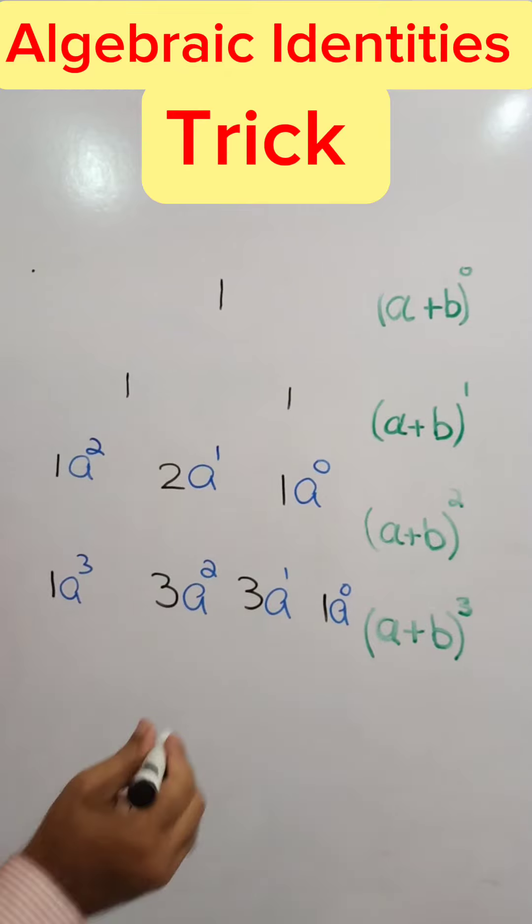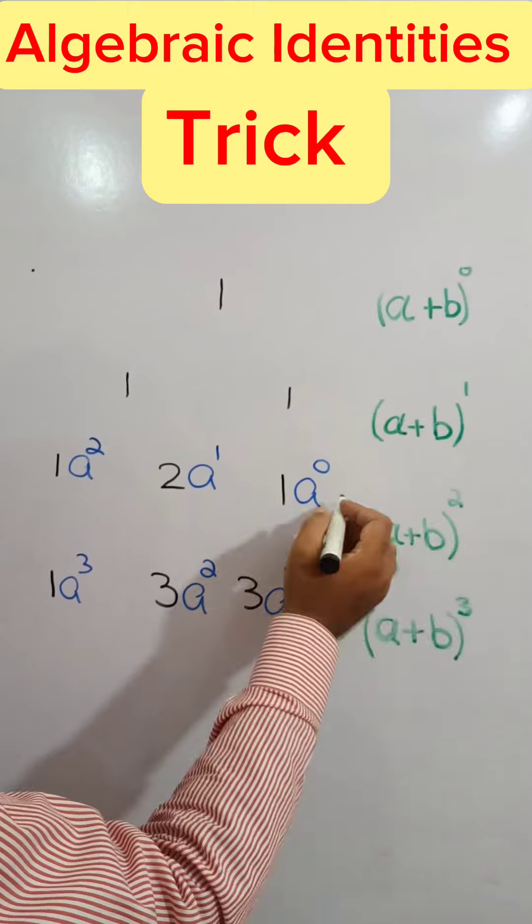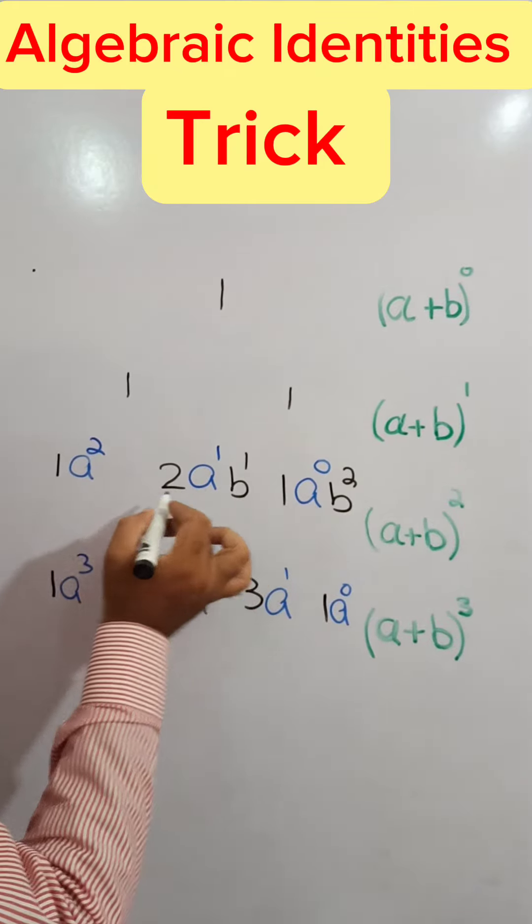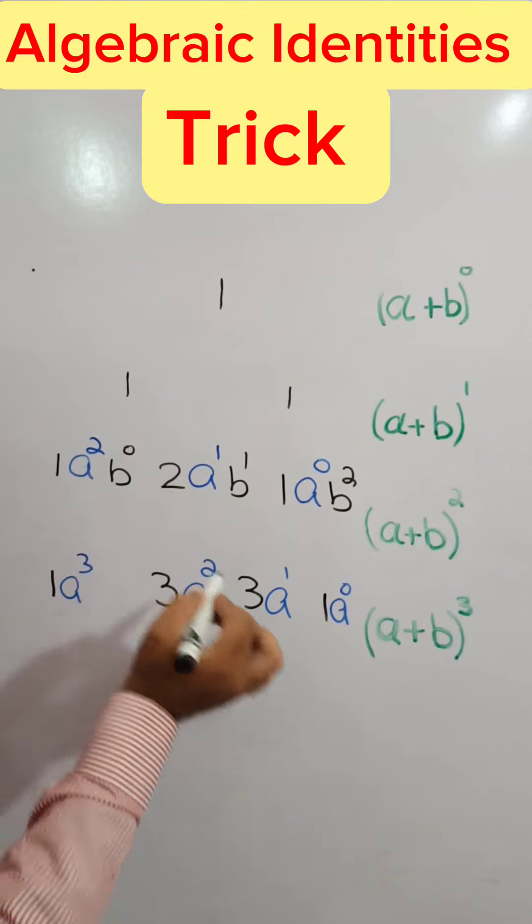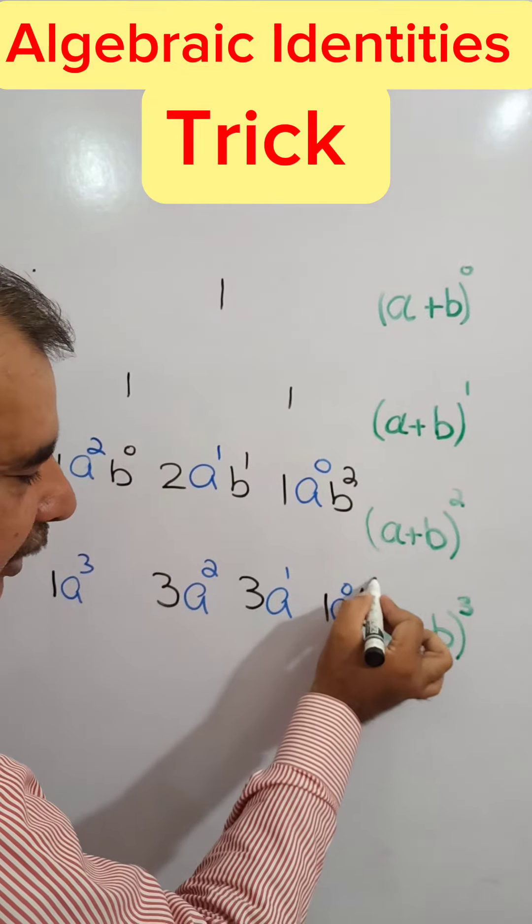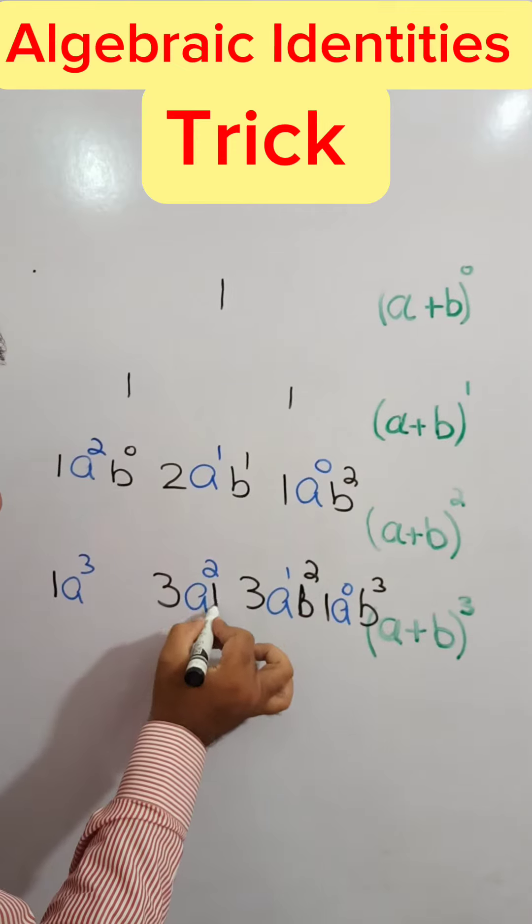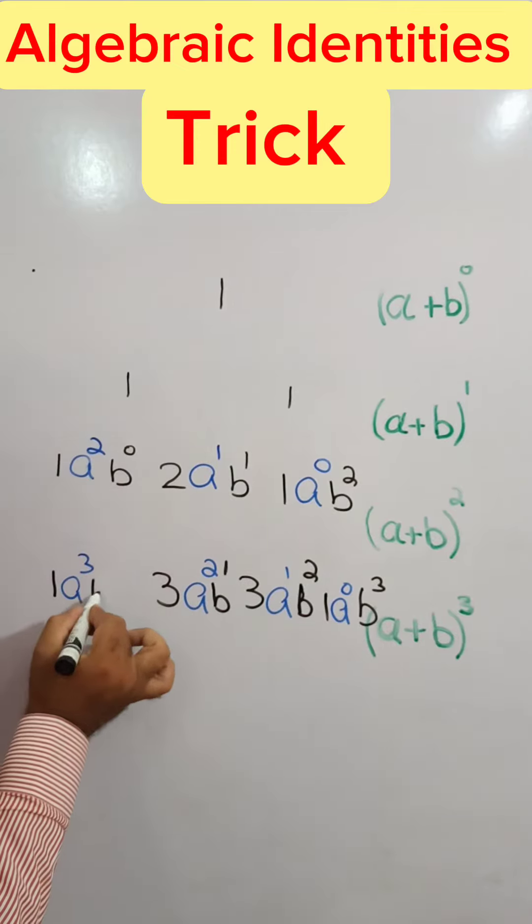And what about b? Here again start for the right side. b square. b1. b0. b cube. b square. b1. b0.